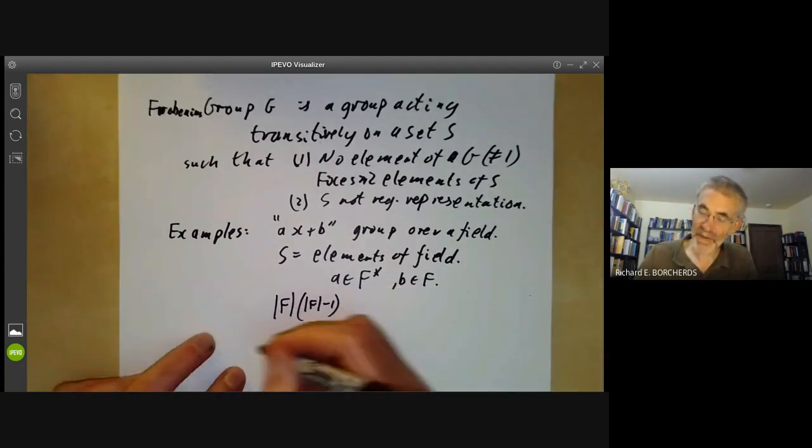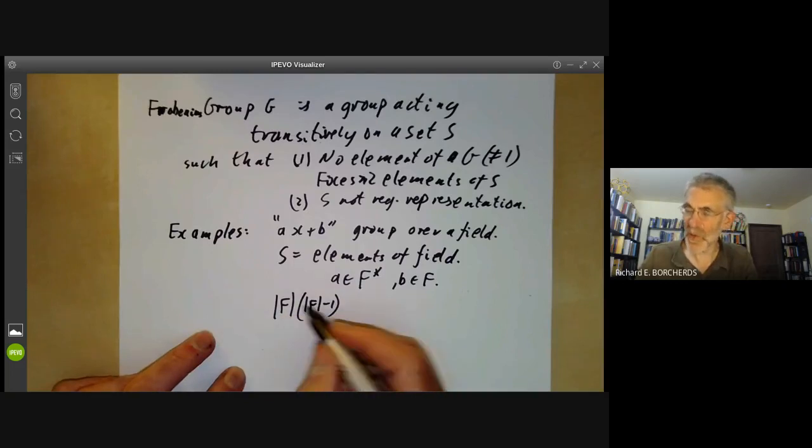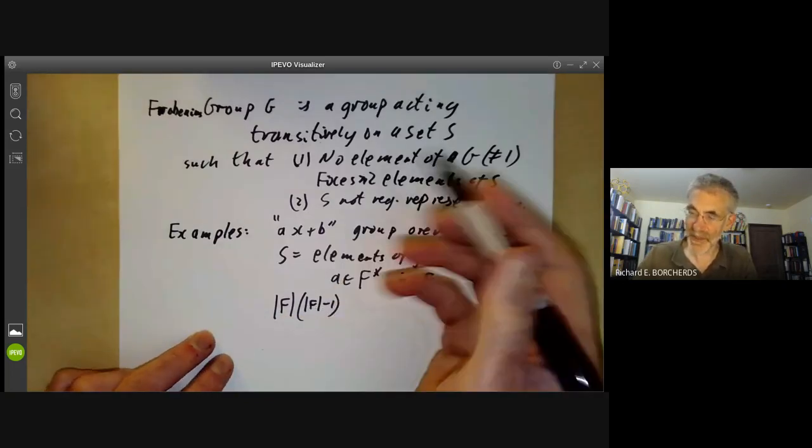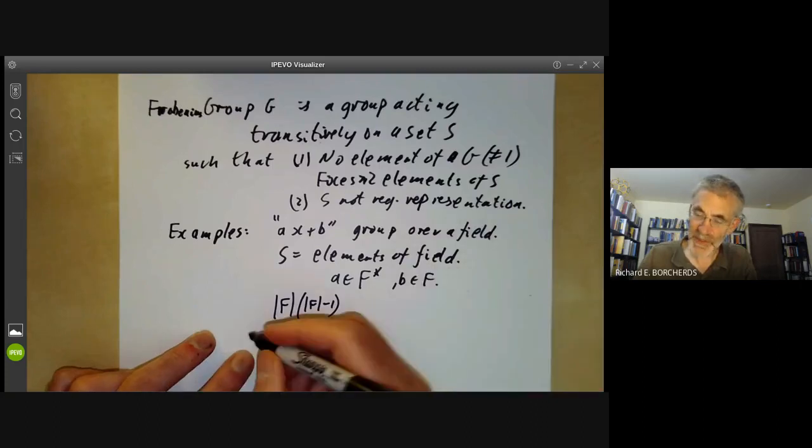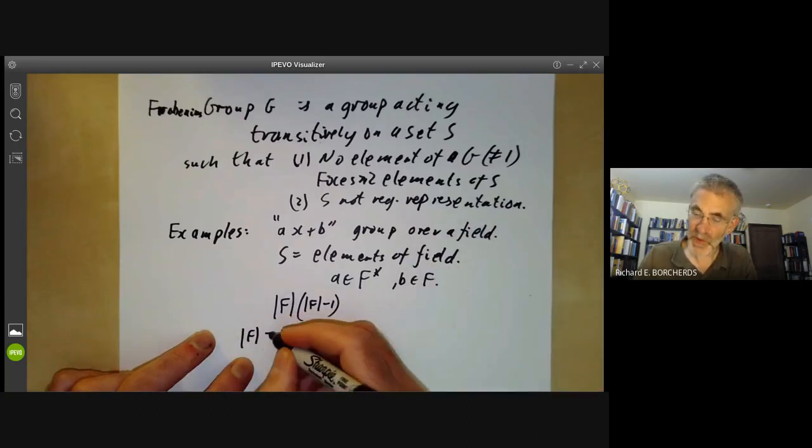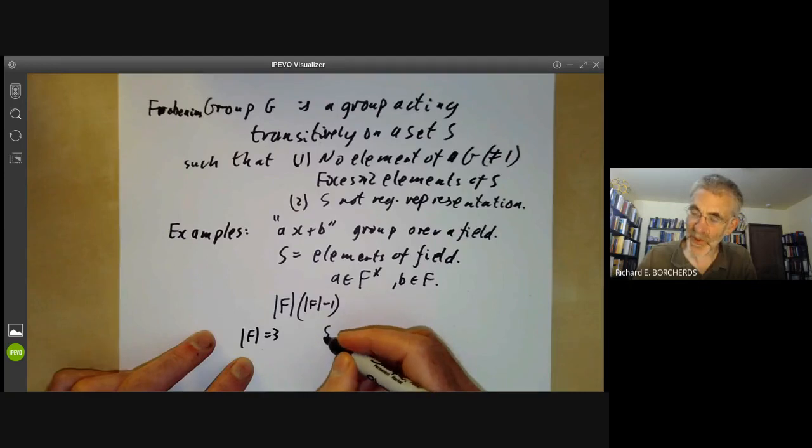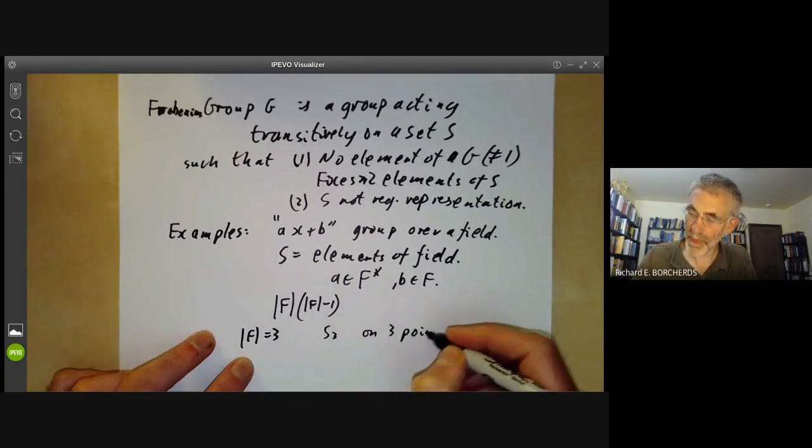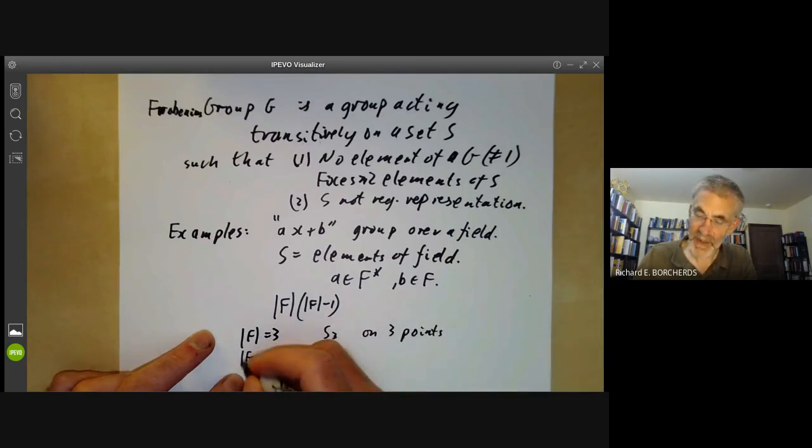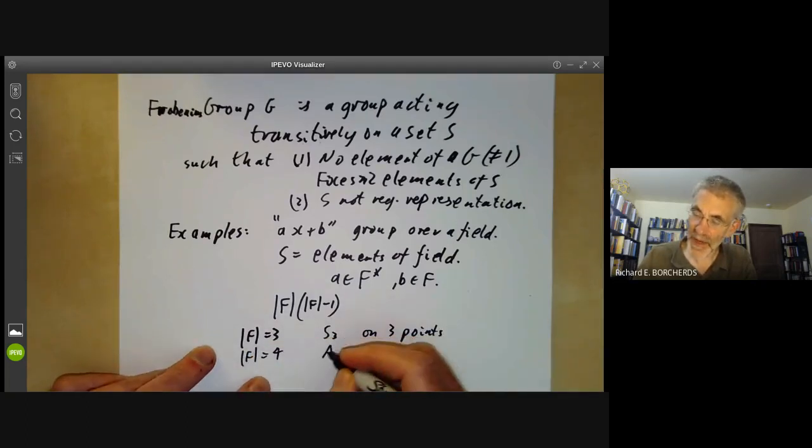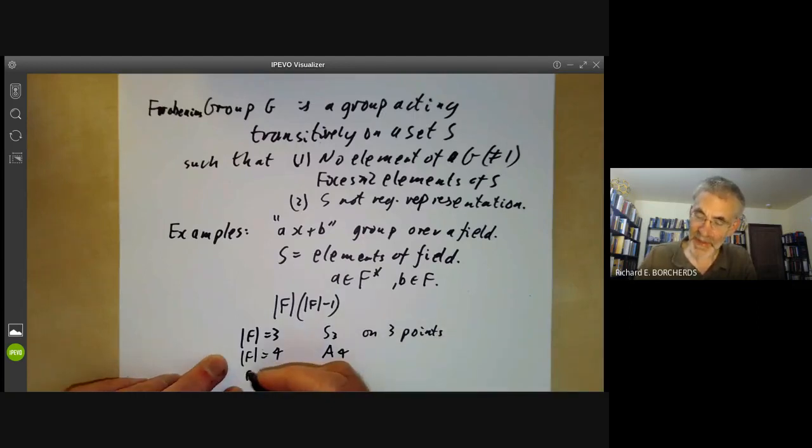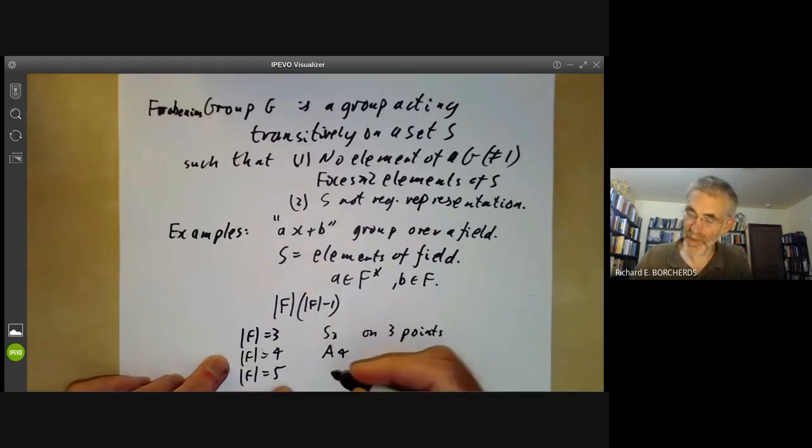So if the field is order two, this doesn't quite work because we just get a group of two elements. If F is order three, then we get the group S3 acting on three points. If the field is the field of order four, then we get the group A4. And if the field has order five, we get the group of order 20 that we just mentioned earlier.